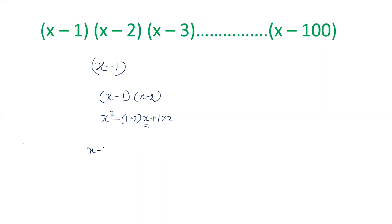If there are three brackets, x cube minus the coefficient of x square will be 1 plus 2 plus 3 into x square plus and so on. So coefficient of x square is 1 plus 2 plus 3. Now how did we get this? Let us see one by one step by step.